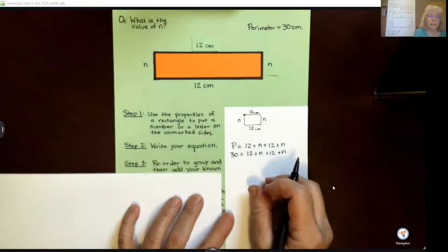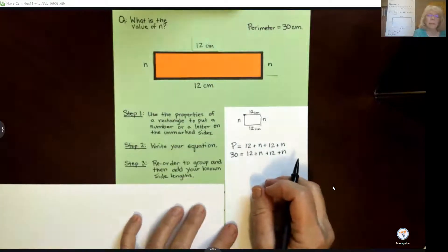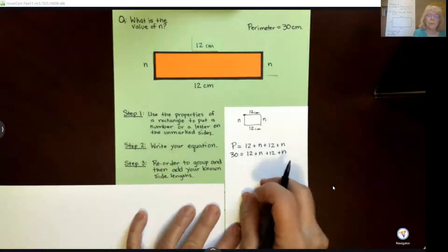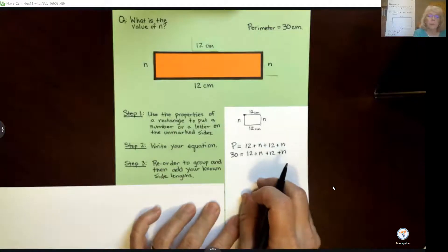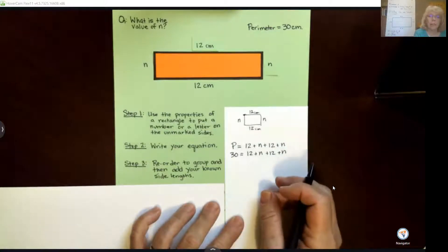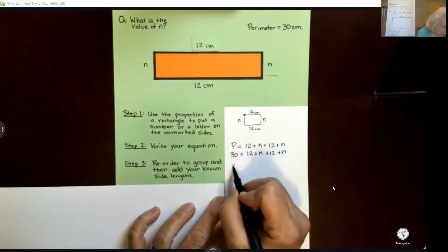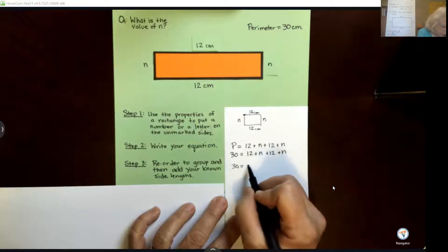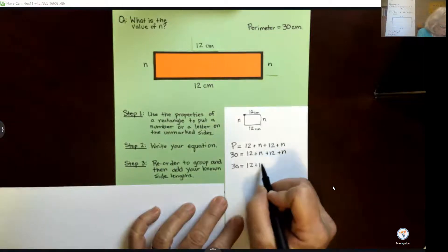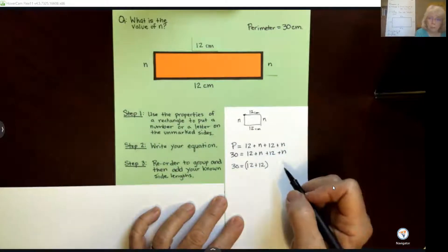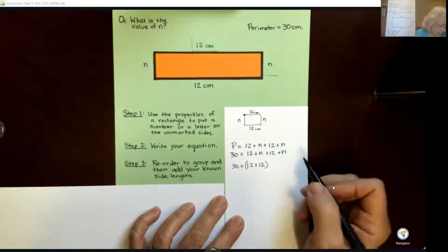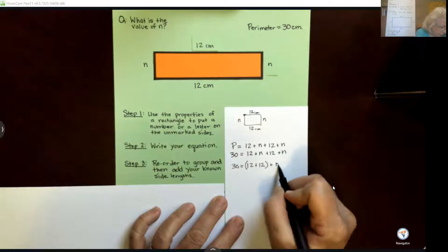What are we going to do next? So our step three is to reorder to group our numbers so that we can add them together, and our numbers are our known side lengths. So this looks like we say 30 equals 12 plus 12. Remember, because of the commutative property and the associative property of addition, we can do this. Plus we're going to put our n's together, n plus n.